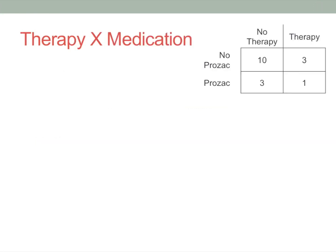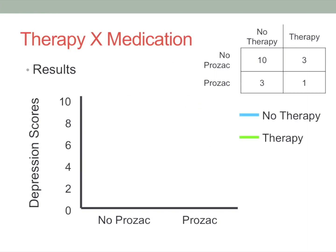When graphing multiple independent variables, the easiest way is with a line graph. On the horizontal axis we plot one independent variable — those with no medication versus those given medication. Each group that received either no therapy or therapy is depicted with a different colored line. Those with no therapy and no Prozac had very high depressive scores; no therapy but Prozac had lower scores. Those with therapy but no medication fared just as well as no therapy with medication, and those who got both had the lowest depressive scores.